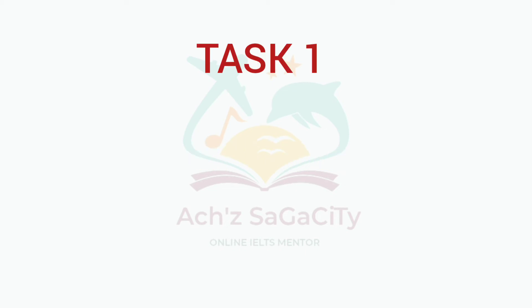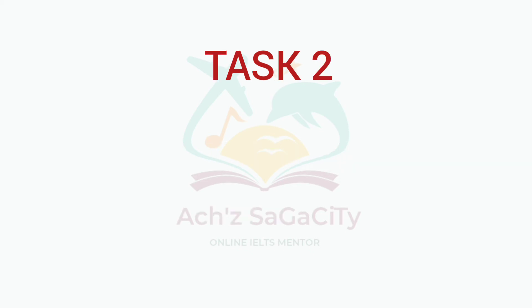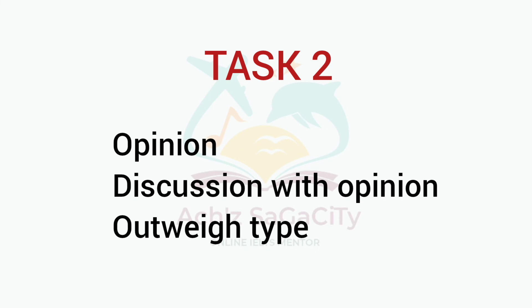Regarding the academic module writing: in Task 1 this time you can expect an infographic structure — that means bar chart, table, line chart, or a combination of any two, and also pie charts. Focus on these four categories for both morning and evening sessions. For Task 2, you can expect an opinion type essay, a discussion with opinion type essay (discuss both views and state your opinion), and outweigh type questions — advantage outweighs disadvantage or vice versa. Be thorough with the updated structure.